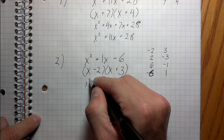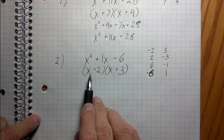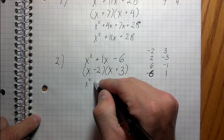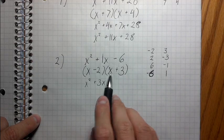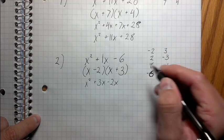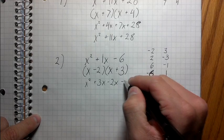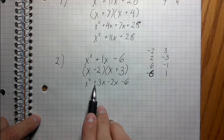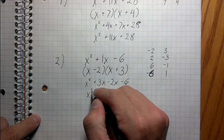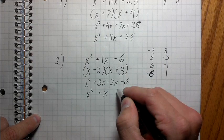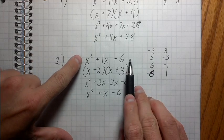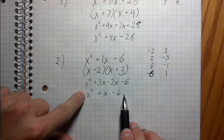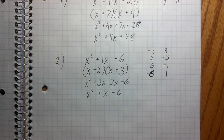This is the factored form. If we check it by FOIL: x times x is x squared, x times 3 is positive 3x, negative 2 times x is minus 2x, and negative 2 times positive 3 is negative 6. Combining like terms: positive 3x and negative 2x give a positive x, and then negative 6 — which is exactly what we started with.